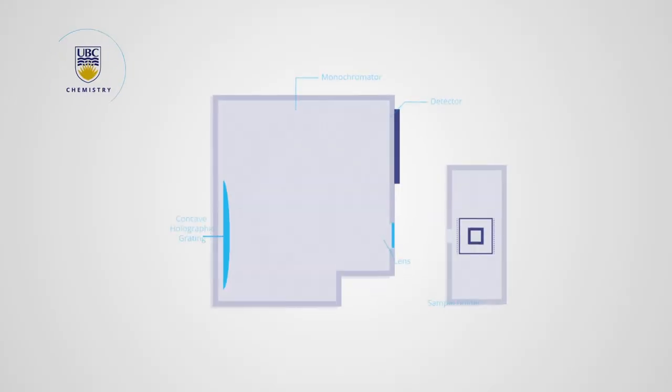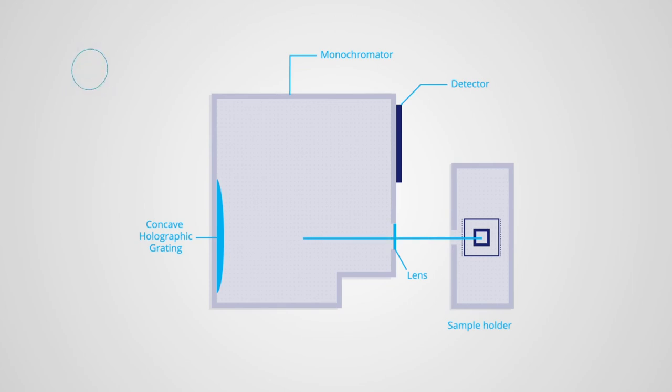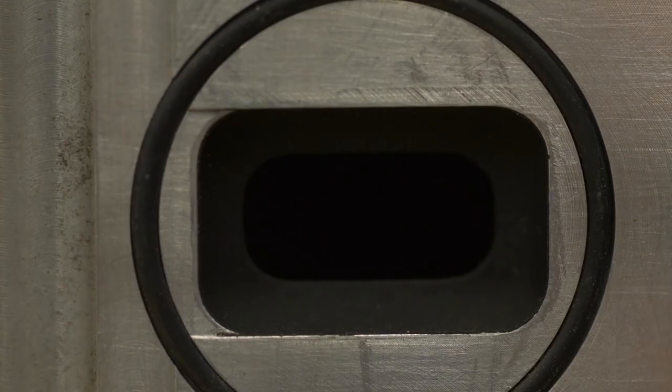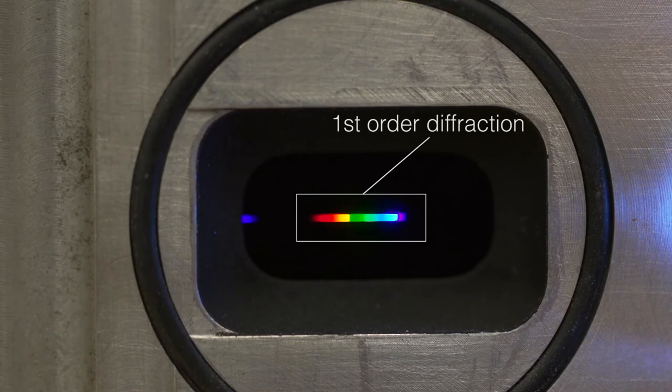The light enters the monochromator through a small lens, and then hits a concave holographic grating. The concave holographic grating disperses the light beam into a strip of its component wavelengths, and focuses each individual wavelength onto a different area of the detector.